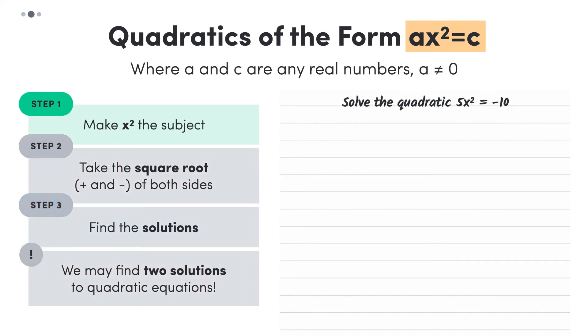Let's use these steps to solve another quadratic. 5x squared equals negative 10. First, we want to make x squared the subject. So we divide the equation by 5. Now we need to take the square root of both sides, giving us x equals plus minus the square root of negative 2. Finally, we solve to find our solutions.